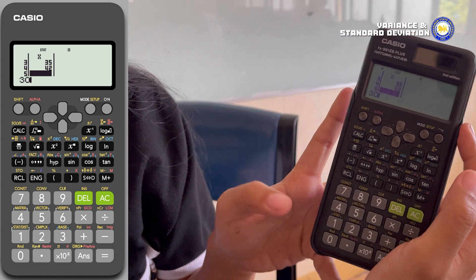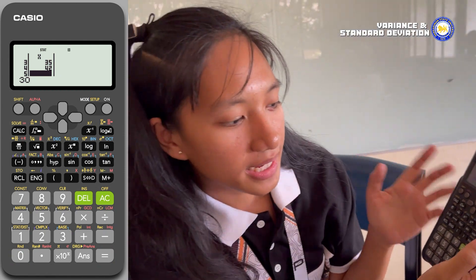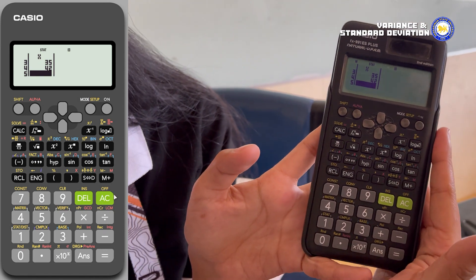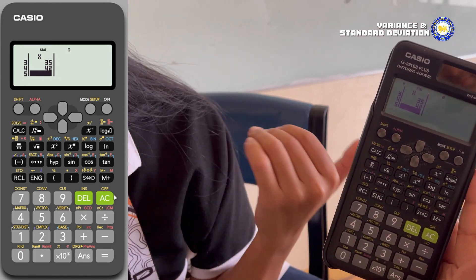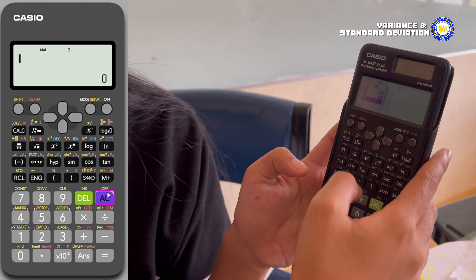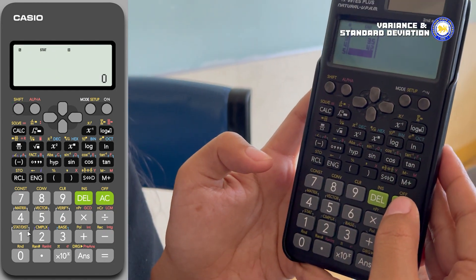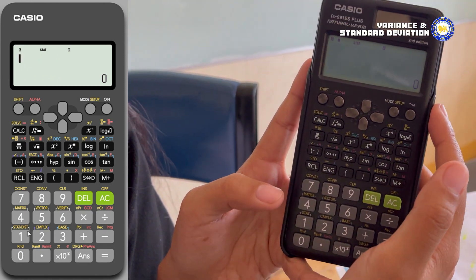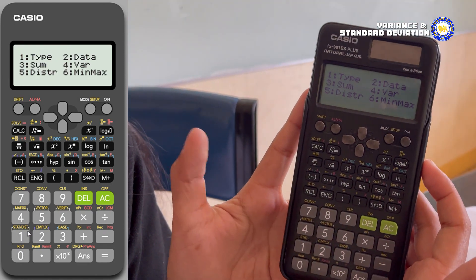Step three will be accessing statistical calculations. It's time to access the statistical calculations menu, so press Shift, navigate to the Statistic menu by choosing 1, select 4.